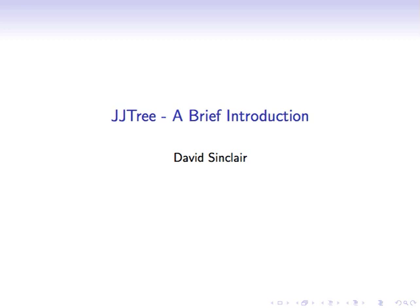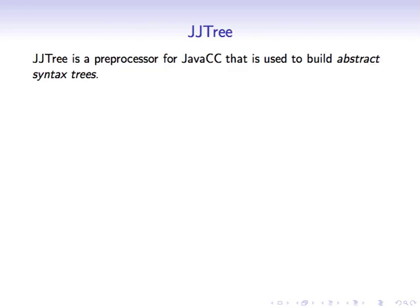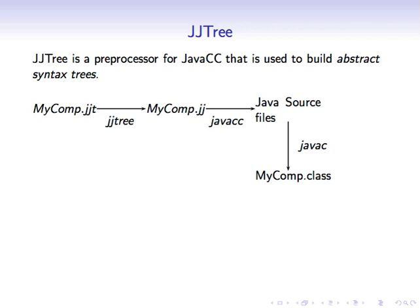In this tutorial we're going to look at JJTree. JJTree is a preprocessor for JavaCC, the Java Compiler Compiler, and the goal of JJTree is to assist us in building abstract syntax trees. The input to JJTree will be a file with a .jjt extension. We run JJTree on that and it will produce a file for JavaCC. We process that with JavaCC and get a set of Java source files which we can compile into our desired compiler.